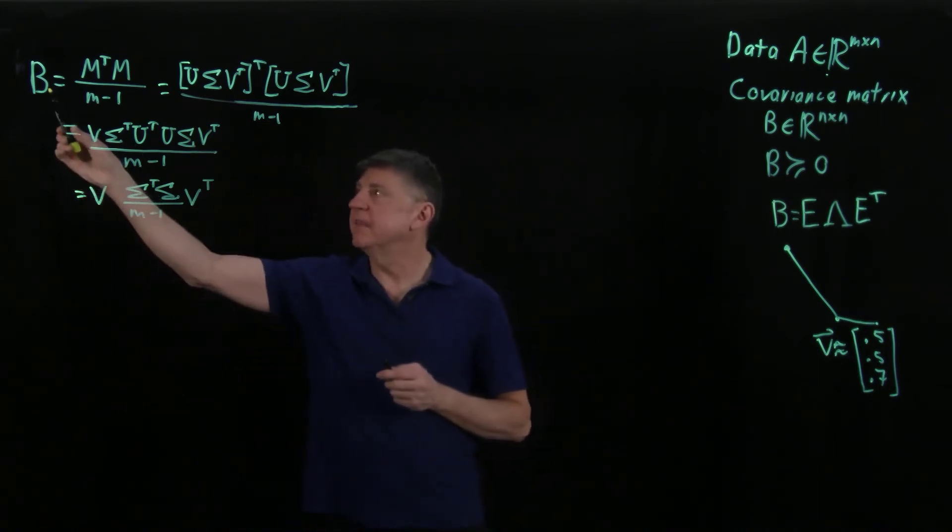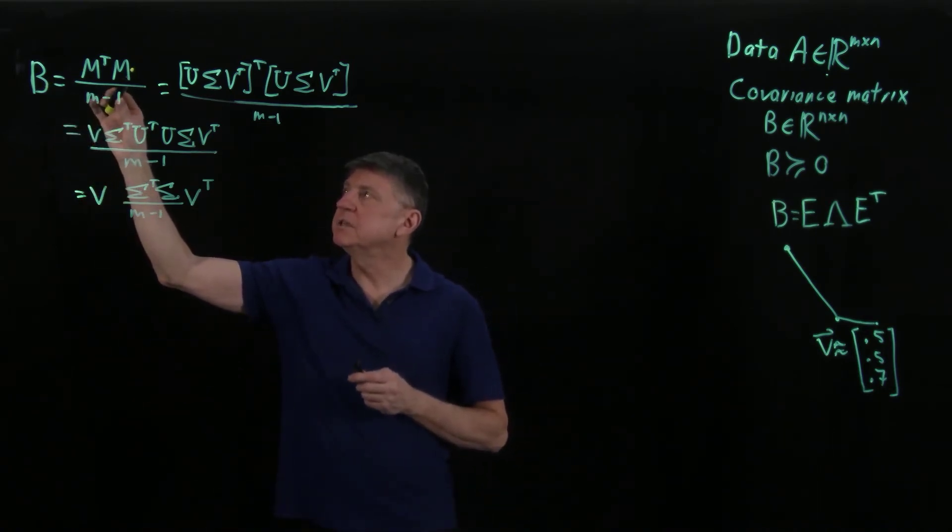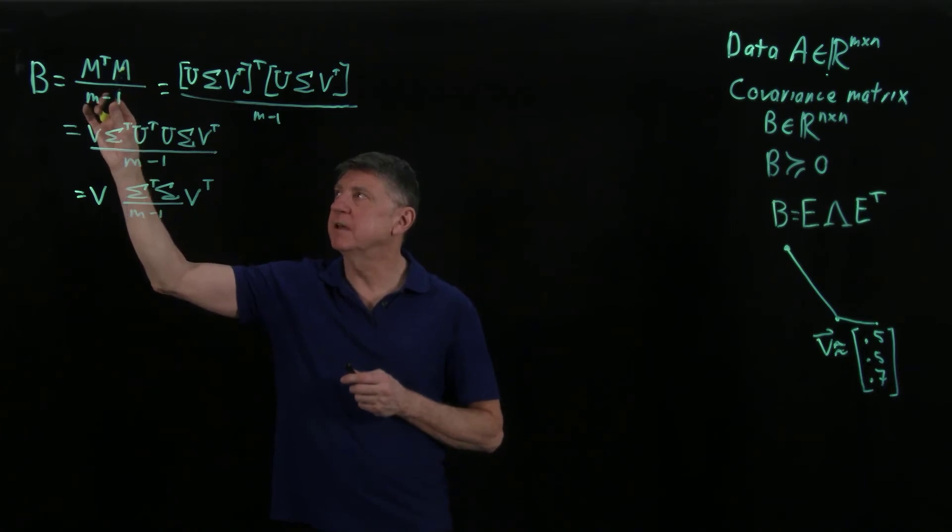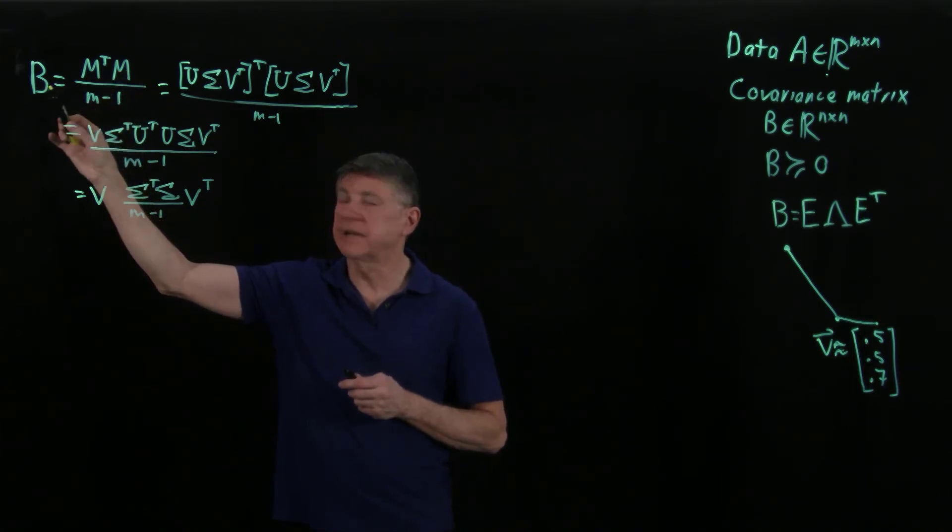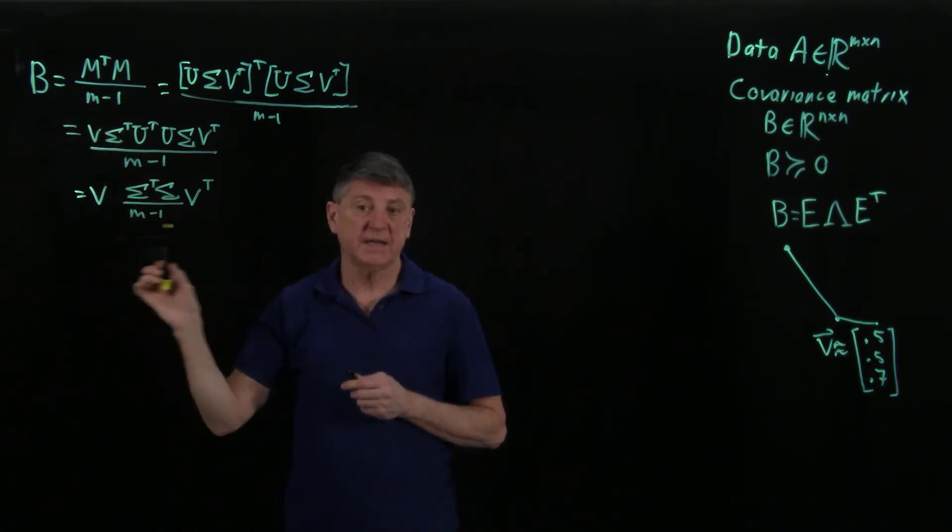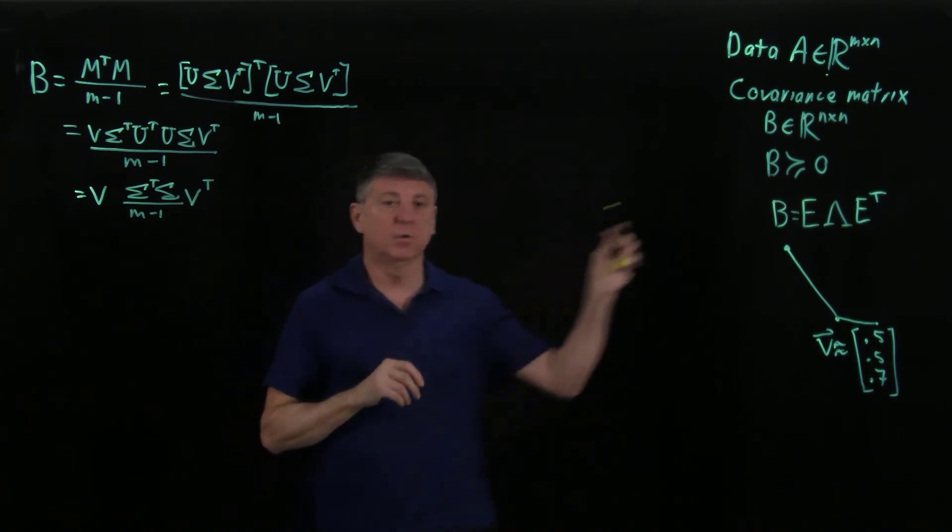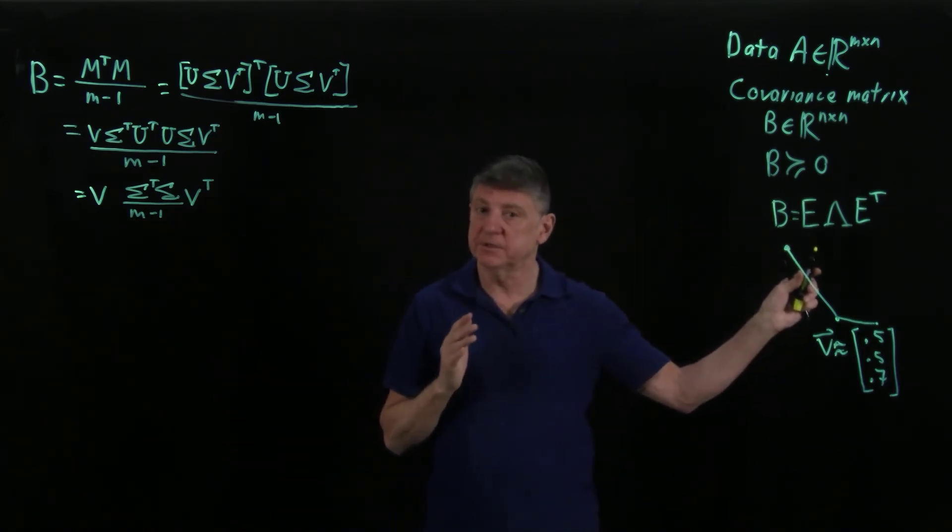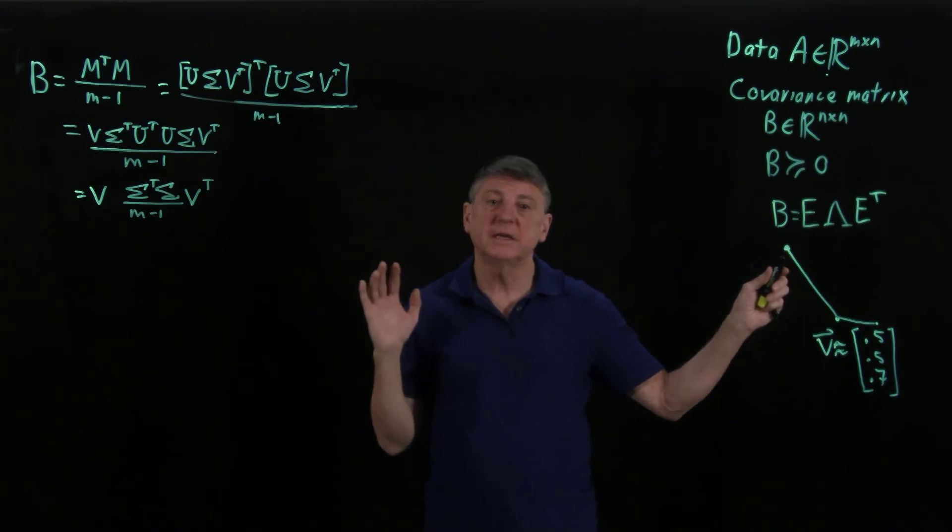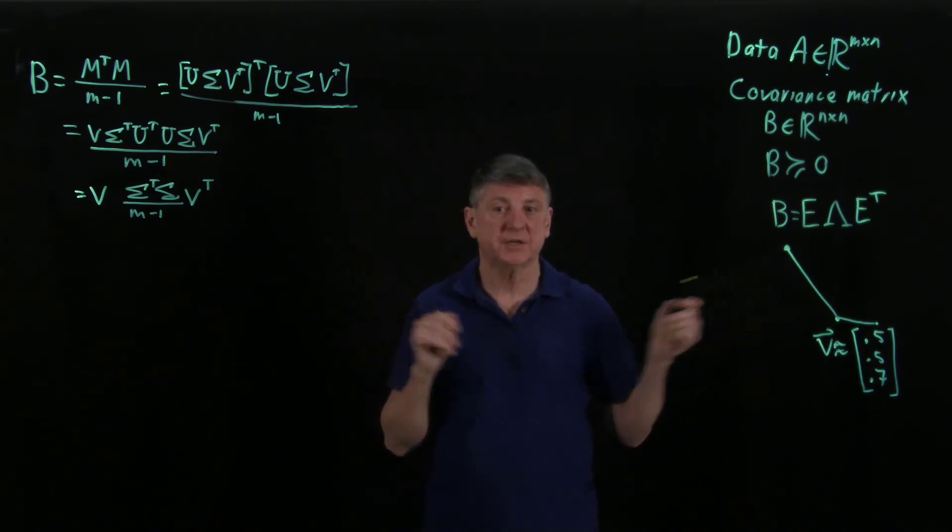I can say, well, if we use the singular value decomposition of the zero mean matrix to get the covariance matrix, I get this expression. And then over here I have this expression, and so these matrices have to match up.